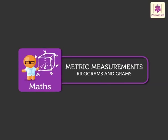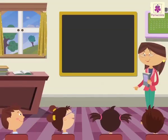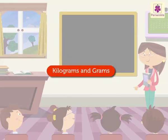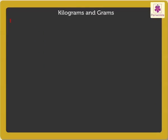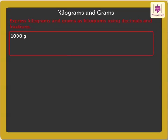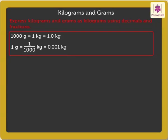Kilograms and Grams. Kids, we are already familiar with kilograms and grams. Today, let's learn more about kilograms and grams. We know that 1000 grams is equal to 1 kilogram, equal to 1.0 kilograms in decimal form. And 1 gram is expressed as 1 upon 1000 kilogram in fraction form, which is equal to 0.001 kilogram in decimal form. It is one of the 1000 equal parts of a kilogram.